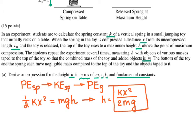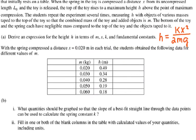So my expression for h in terms of m, x, and k would be kx² over 2mg. With the spring compressed a distance of 0.02 meters in each trial, the students obtain the following data for different values of the mass. So the mass is given, they obtain different heights, and every time they compress the same distance.